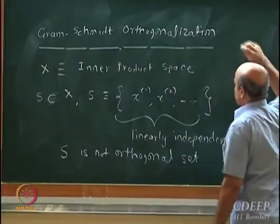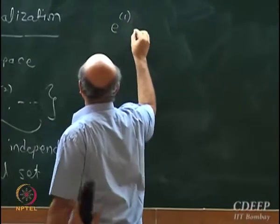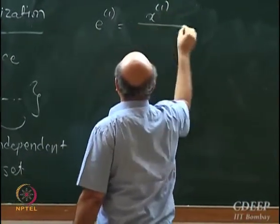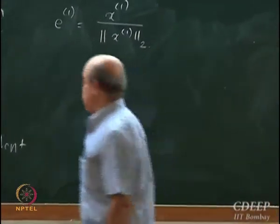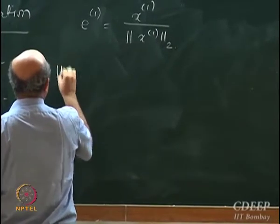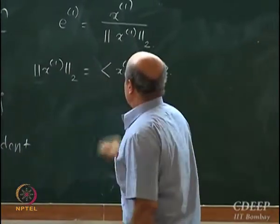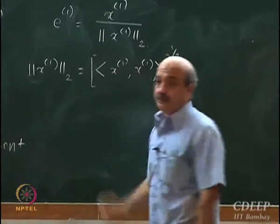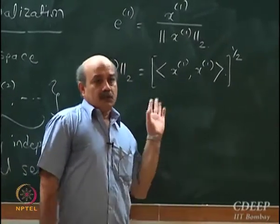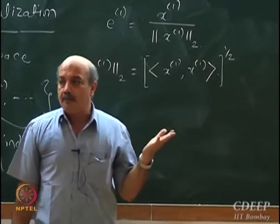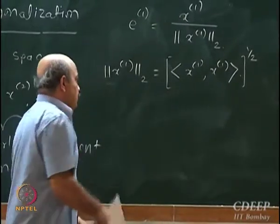I start by defining a unit vector E1, which is going to be X1 divided by the norm of X1. The inner product defines a norm, so the 2-norm of X1 is the inner product of X1 with itself raised to the half. This is my first vector — it is a unit vector. I want to create a set which is not just orthogonal but orthonormal.